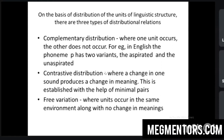The last type is free variation, where a unit occurs in the same environment with no change in meaning. Examples: 'either' can be pronounced as /ˈiːðər/ or /ˈaɪðər/; 'advertisement' can be pronounced as /ədˈvɜːtɪsmənt/ or /ˈædvərˌtaɪzmənt/. They occur in the same environment with no change in meaning — that is free variation.